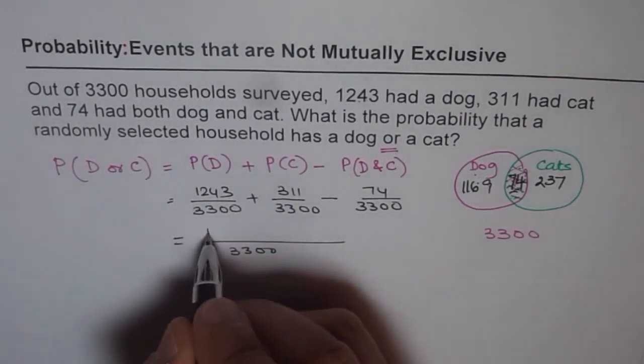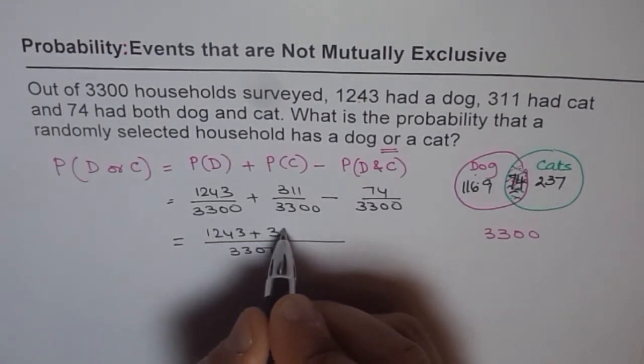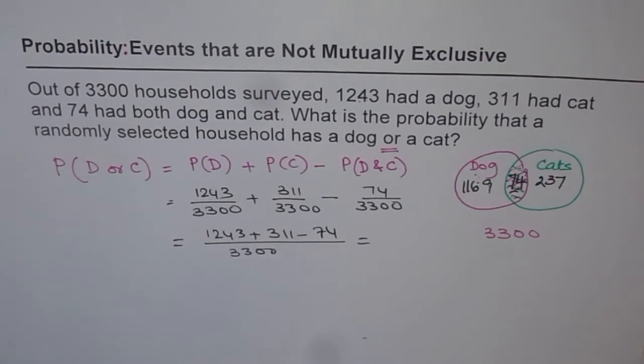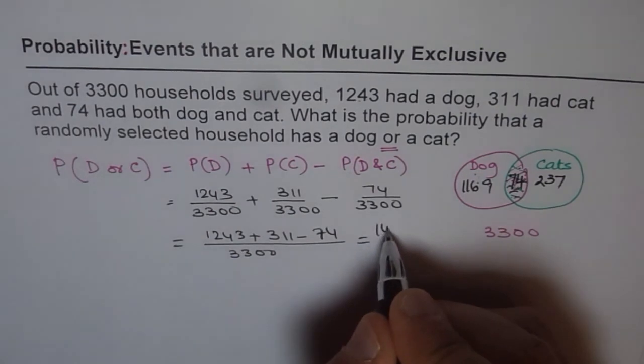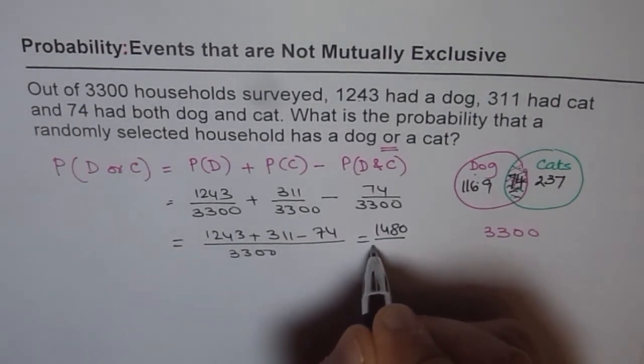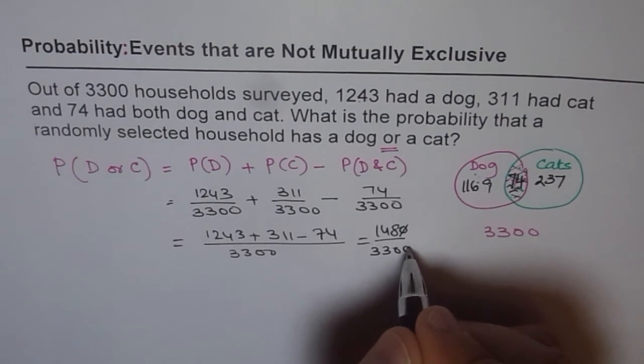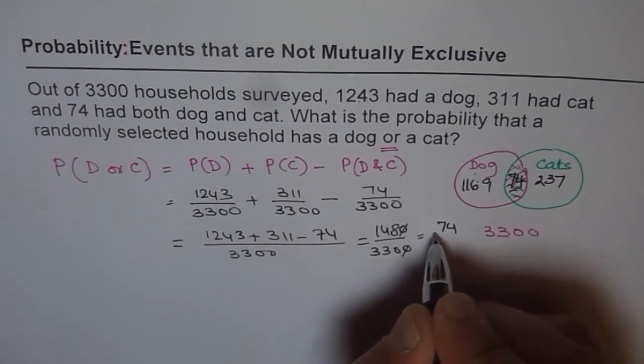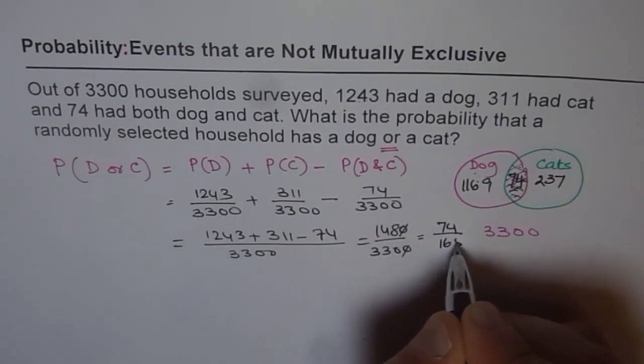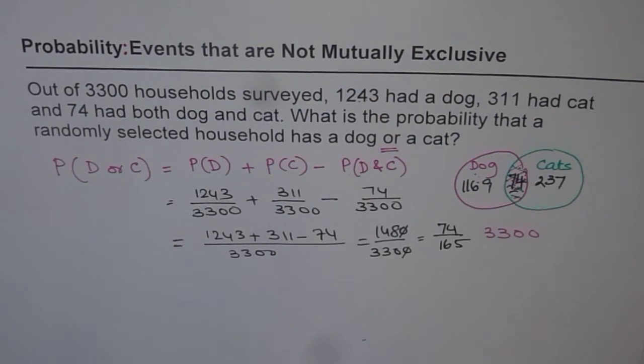So that gives us 3300. And let's do this. 1243 plus 311 minus 74. That gives us, let me use the calculator. 1243 plus 311 minus 74, which is 1480. So 1480 divided by 3300. So this can be simplified. And let's see what do we get. Divide by 4 over 165. So dividing by 2, we get 74 over 165.